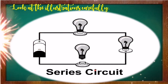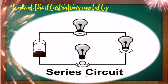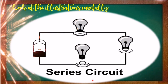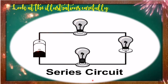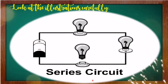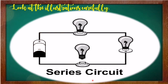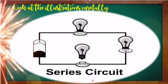Look at the illustrations carefully. This is an example of a series circuit. Bulbs that are connected one after the other in one chain is an example of a series circuit. In a series circuit, current flows through a single path. So when one bulb is loosened or busted, all the other bulbs in the circuit will not light anymore. The loosened or busted bulb breaks or opens the pathway, so electricity cannot flow through.